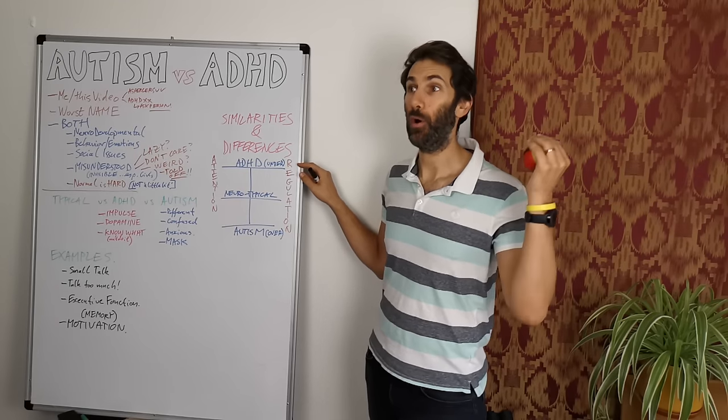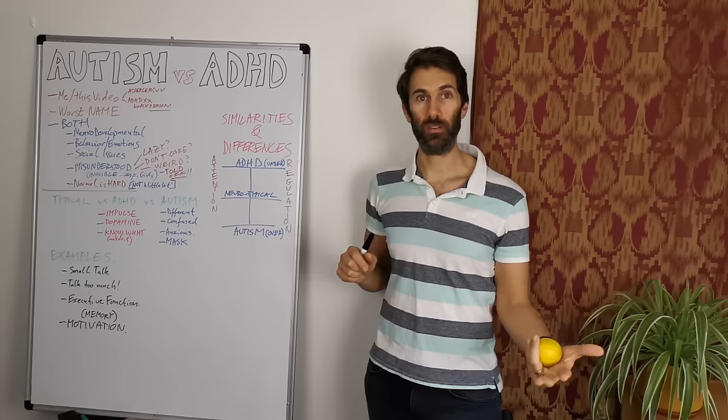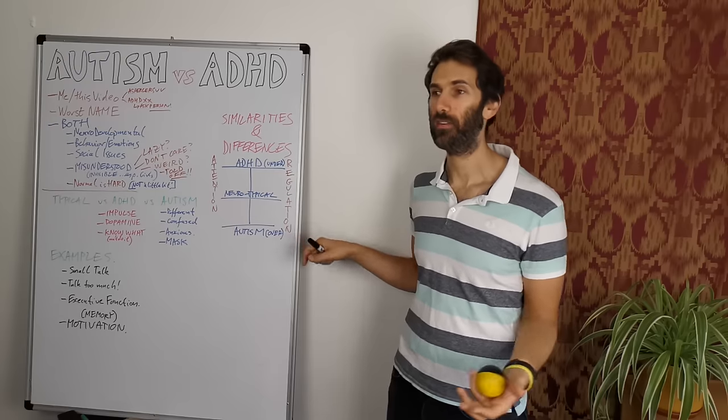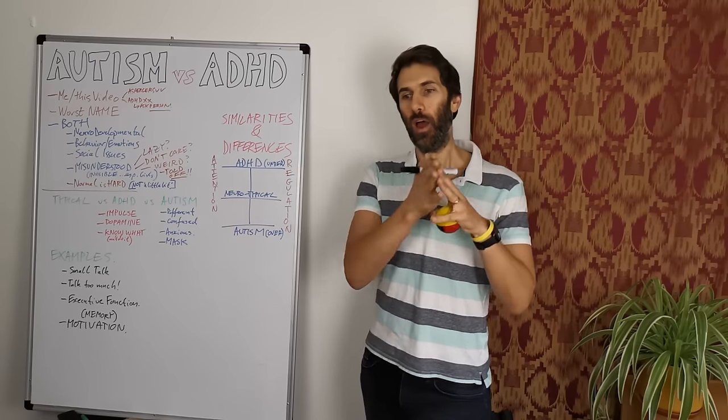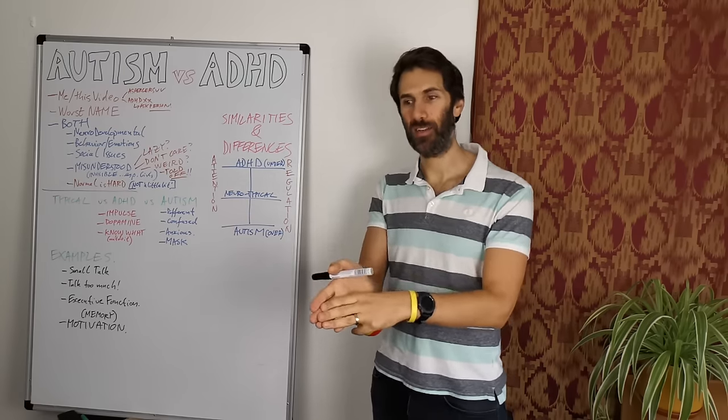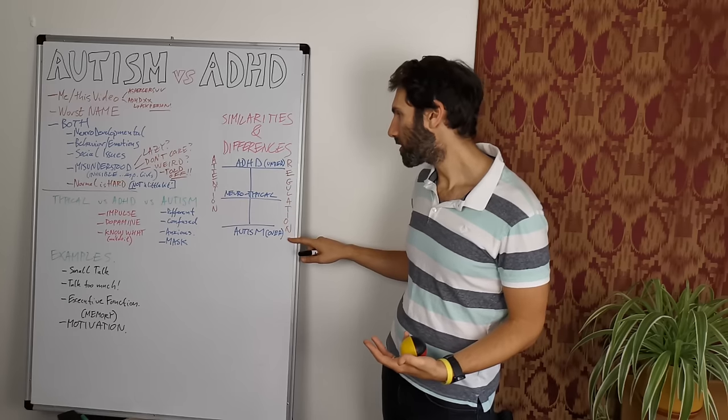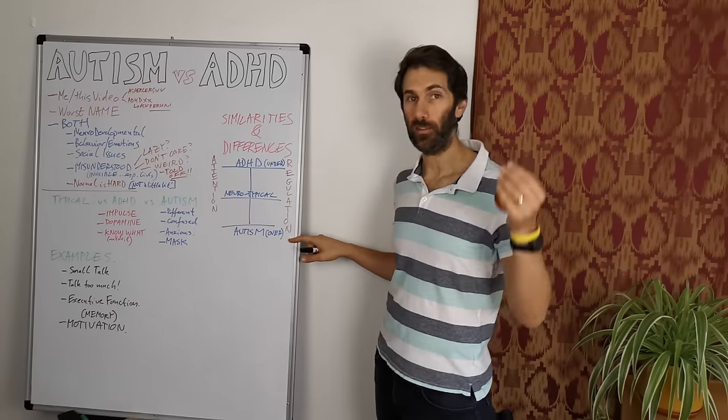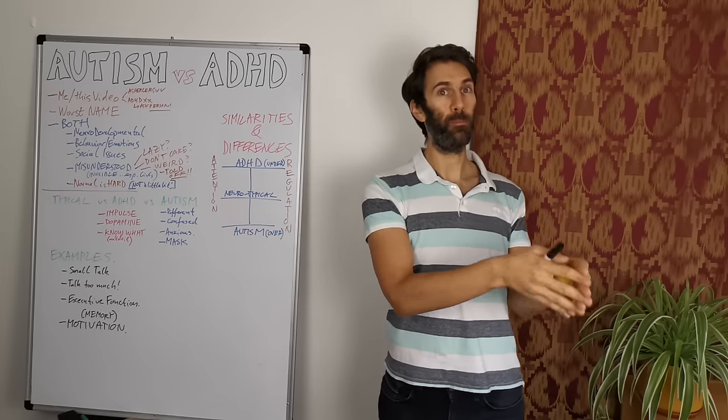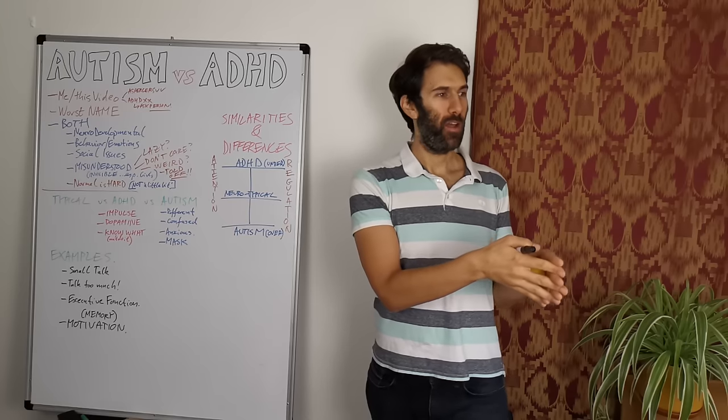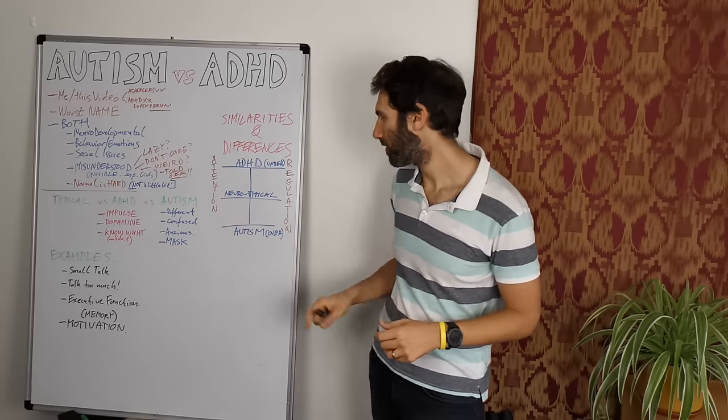Now, interestingly, ADHD is also characterized, well, not characterized, but something that can happen with ADHD is hyperfocus in a similar way that autism can have hyperfocus. But in the ADHD case, it's less of a hyperfocus and more of a hyperdistraction, hyperstimulation. I'm being constantly stimulated by this thing, and therefore I'm stuck on it, like video games or something. Whereas with autism, because my regulation is so controlled, so over-regulated, I can focus my attention on something and block out the rest of the world so that I am doing just this one thing and I just do not notice anything else. So you can see that there's a bit of a subtle difference there.